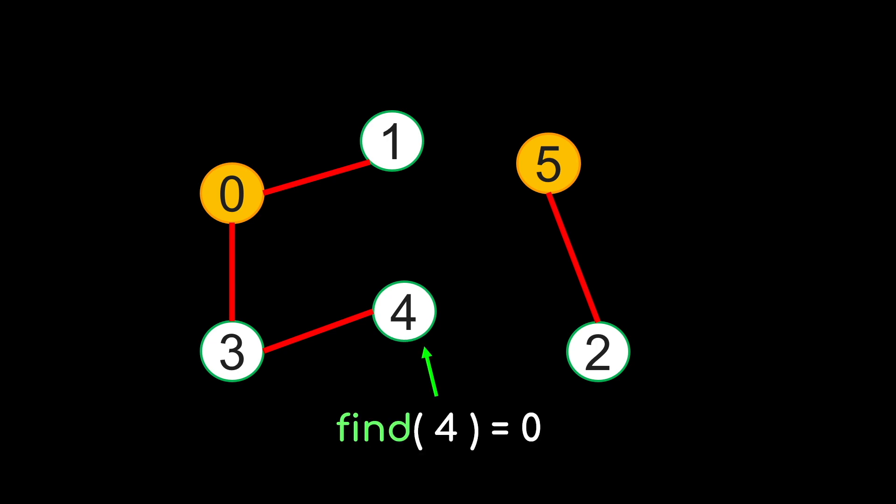For example, when we call find of 4, the representative of the group that 4 belongs to is 0, so therefore we return 0. And of course, the representative will return itself.